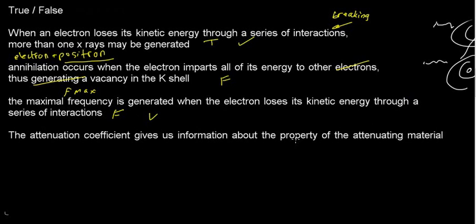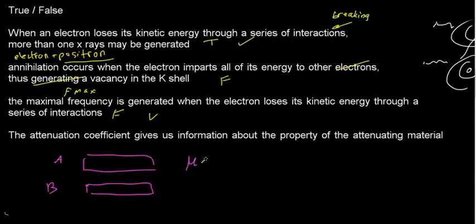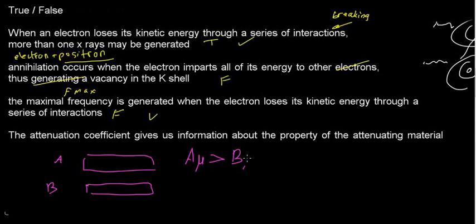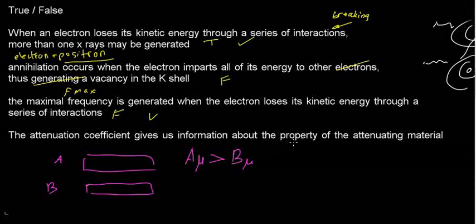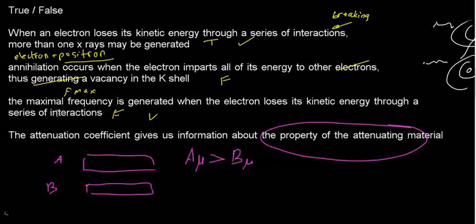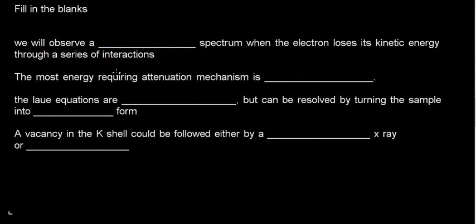Next: 'The attenuation coefficient gives us information about the property of the attenuating material' — and that's exactly what it does. It gives the characteristic attenuation measurement. If material A is a better absorber, its attenuation coefficient will be higher than that of material B. So it does give information about the property of the attenuating material — to what extent it attenuates radiation. I'd mark this true.